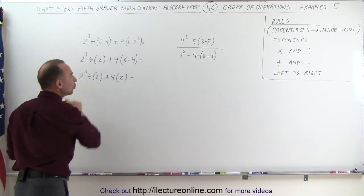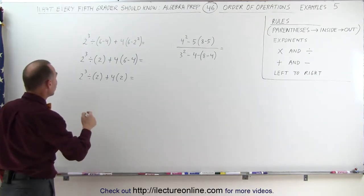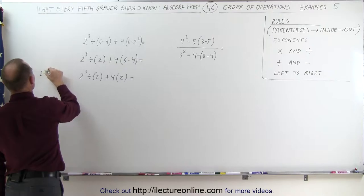Let's do this one now. 2 cubed, what does that mean? That is 2 times 2 times 2. So 2 times 2 times 2 which is equal to 8.